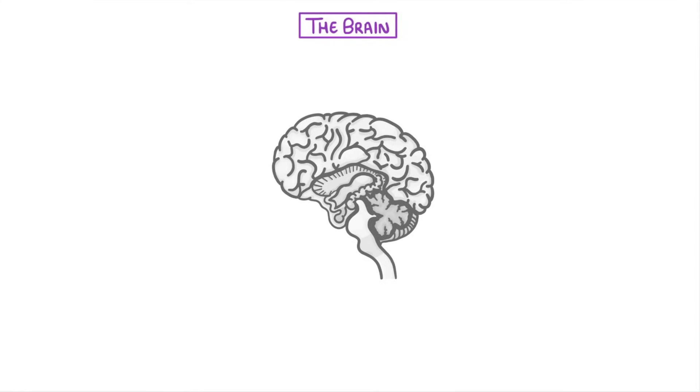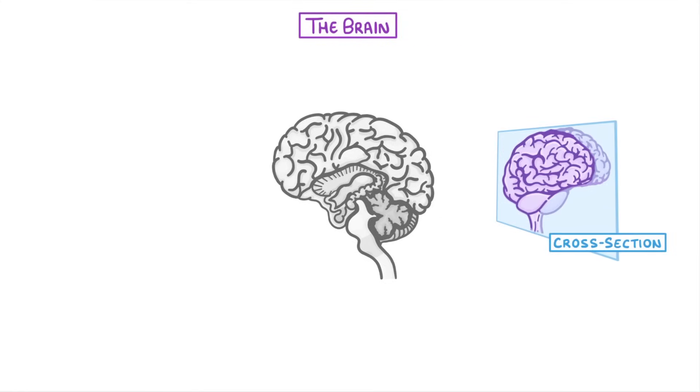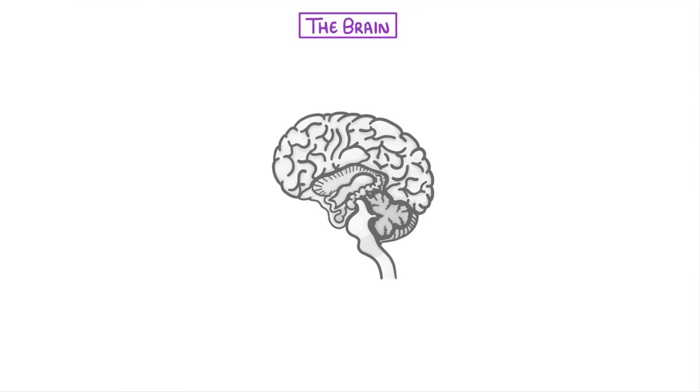Now this image here is actually a cross section of the brain, as though it's been sliced down the middle so that we can see inside. The big wrinkly bit all around the top is called the cerebral cortex, or cerebrum.